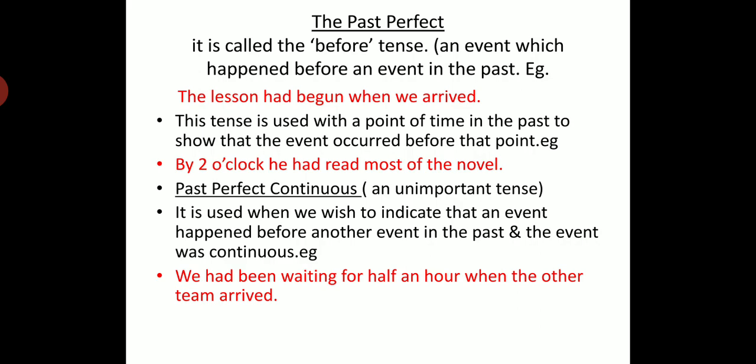For example, 'By two o'clock he had read most of the novel,' or 'In 1986 he had been employed as a clerk for 10 years.' In the second example, the point in time is 1986, and the past perfect tells us about the event that had occurred before that point.